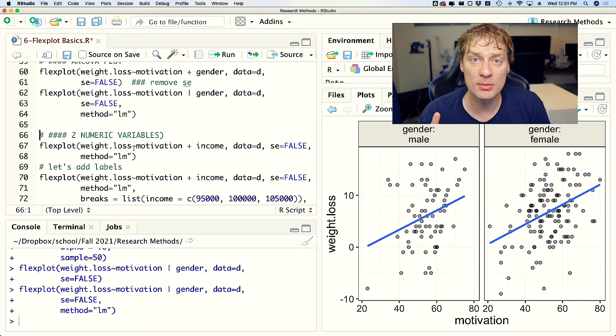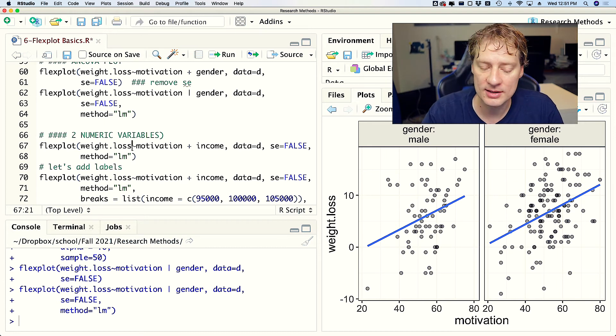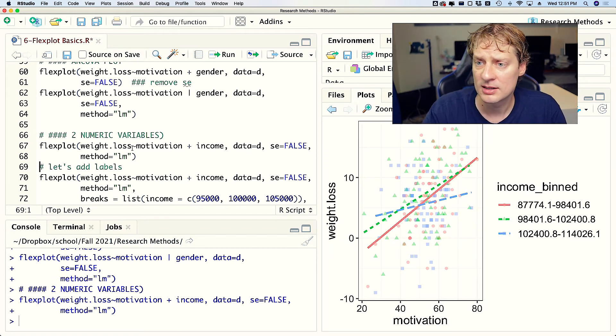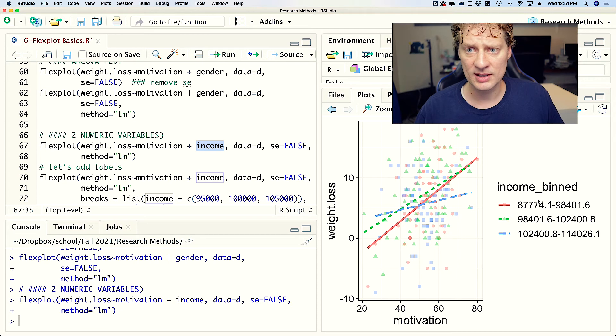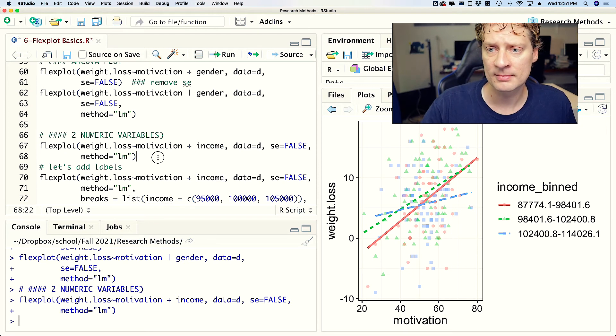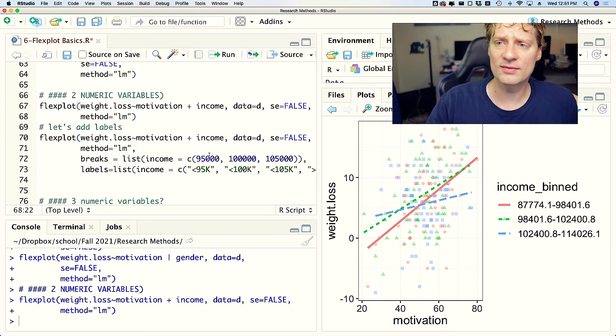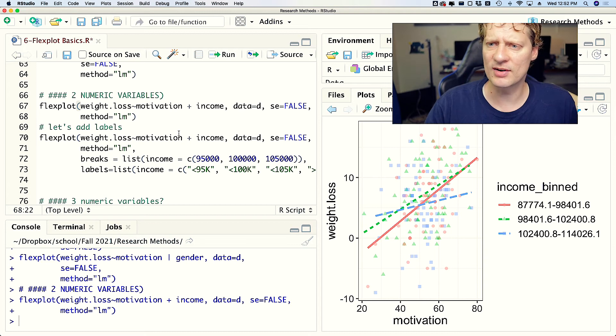Another situation you might be in is you might want to look at the association between two numeric variables and a numeric outcome. There are a couple ways of doing that. You can specify income as a color, and what it's going to do is it's going to bin income. That basically means it's going to take this continuous income distribution and then group them into basically low, medium, and high, although it shows you what the actual values are, because you have to do that in order to visualize a numeric variable.